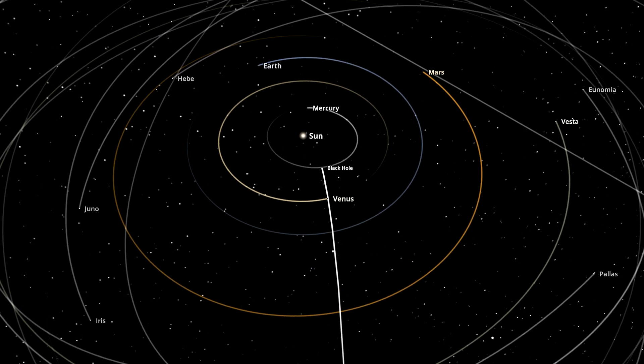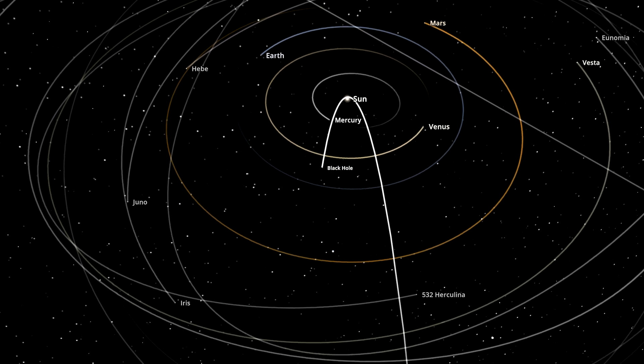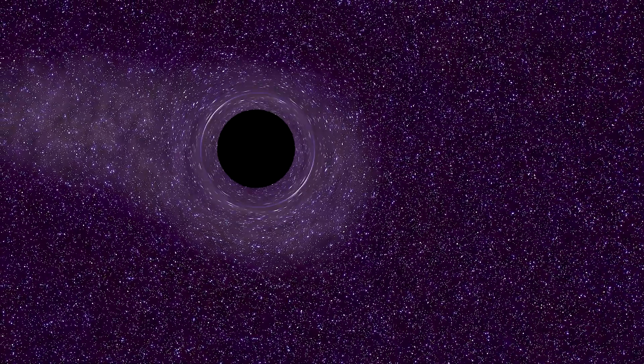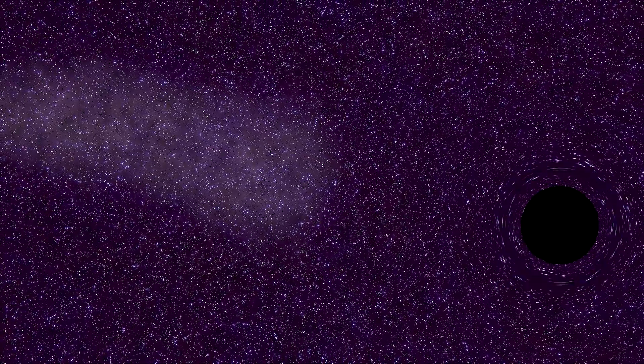So how can something so small yet so dense slip through without causing chaos? Even though it's powerful, this primordial black hole is so compact that it passes through space, not colliding with anything.